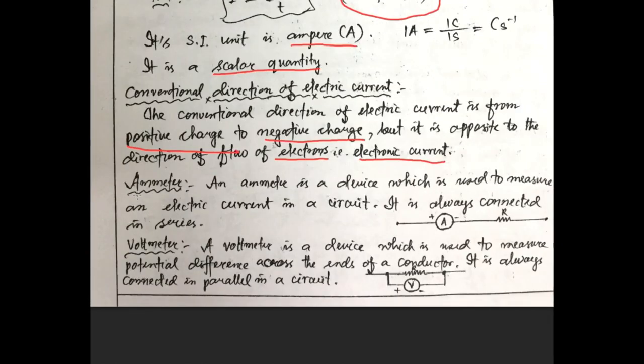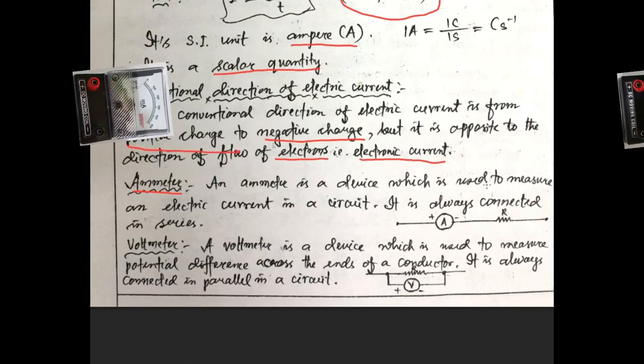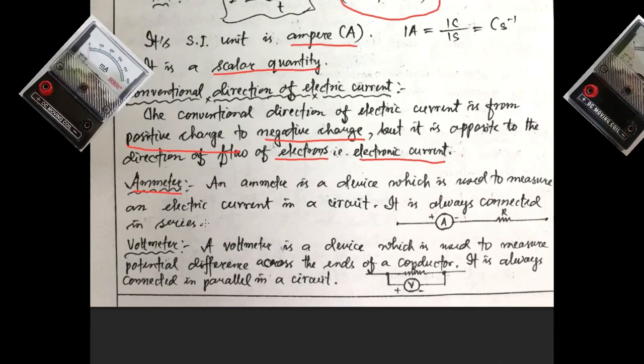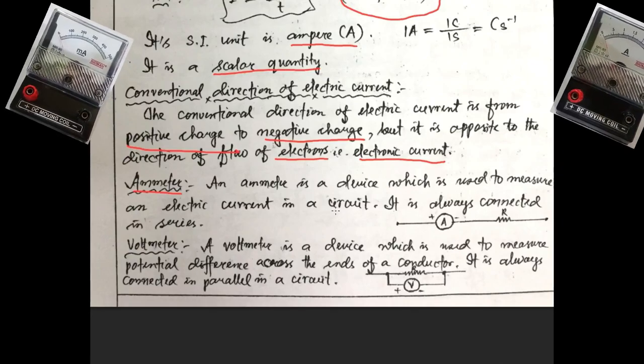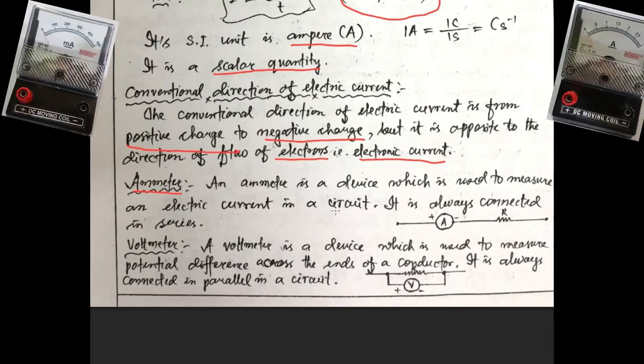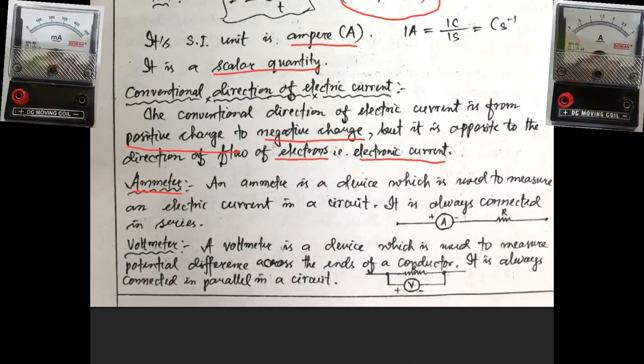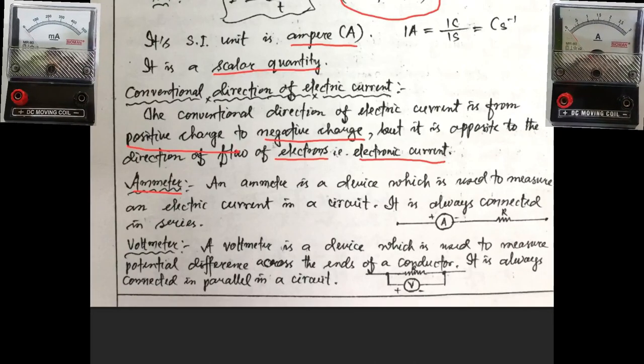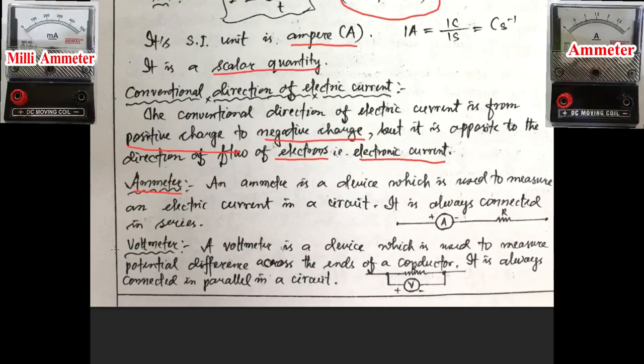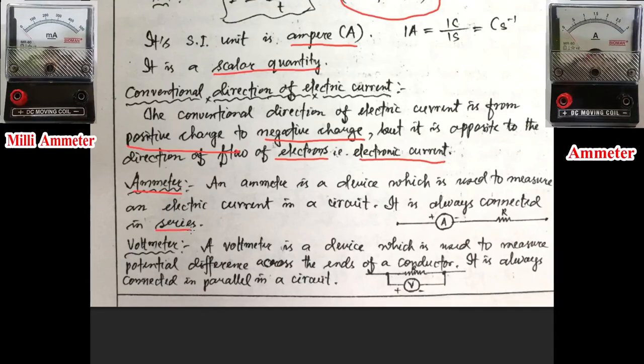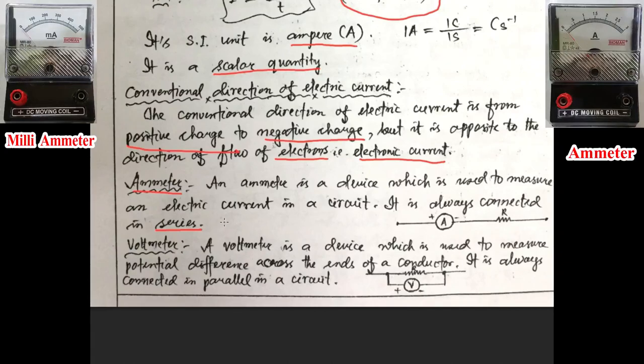Now let me define a new device that is called Ammeter. An Ammeter is a device which is used to measure an electric current in a circuit. It is always connected in series.